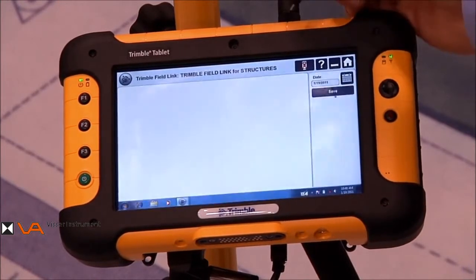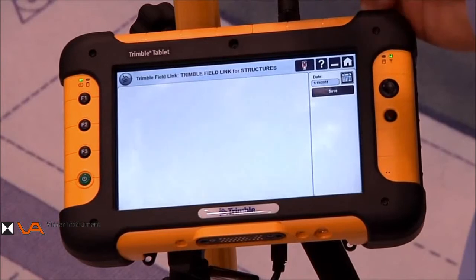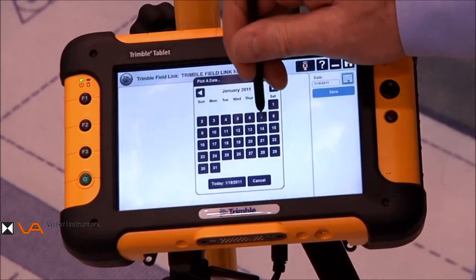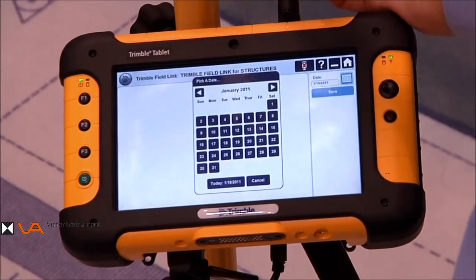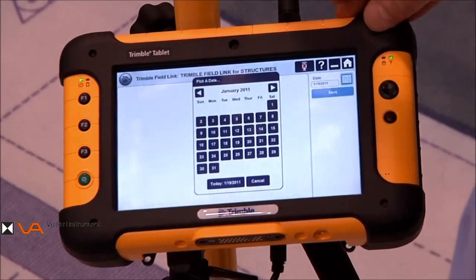The daily layout summary is essentially just a calendar feature that allows us to go in and select a daily layout report by choosing the date on the calendar. It will then access the data, produce the report in a PDF format so that we can send it out directly from the device using Wi-Fi.